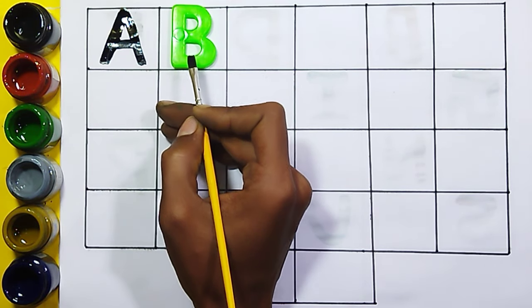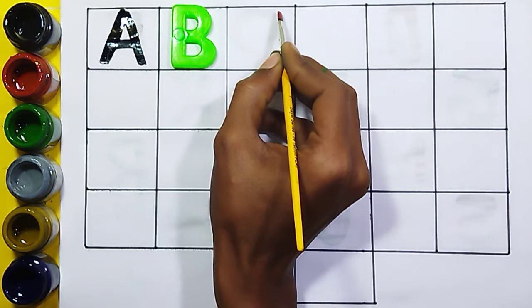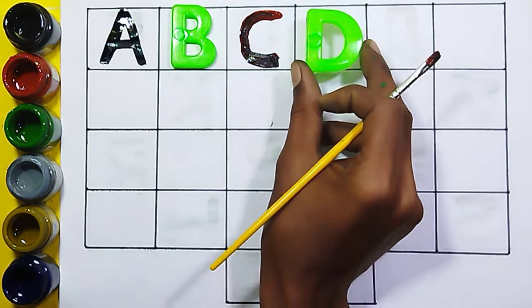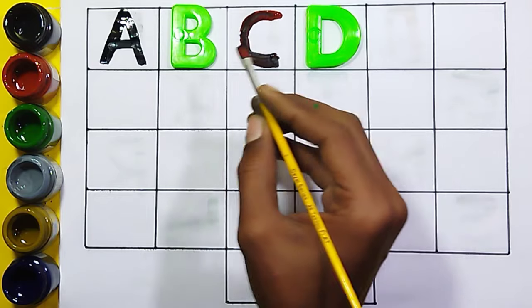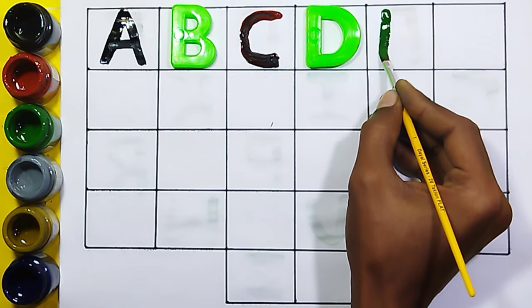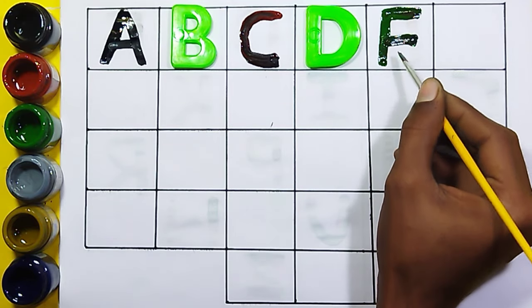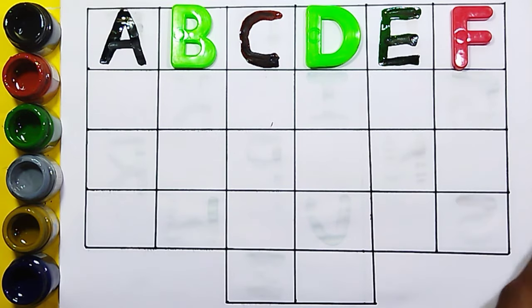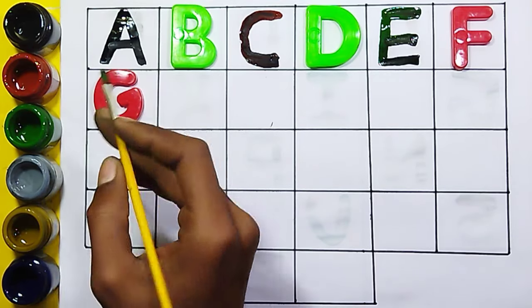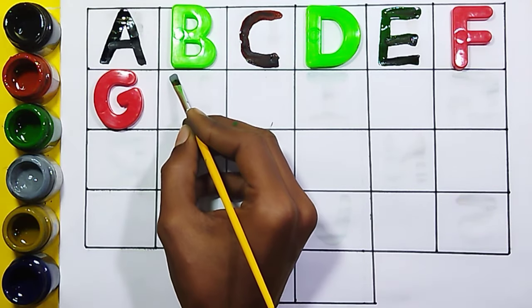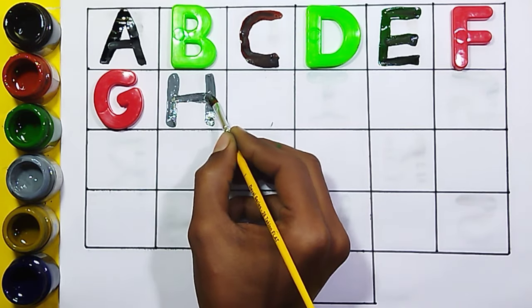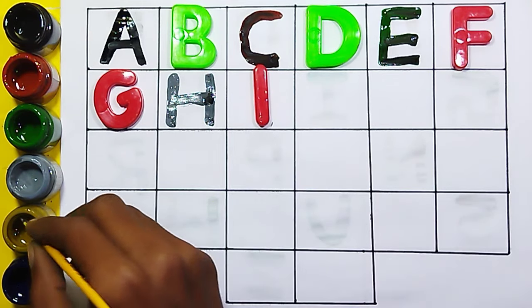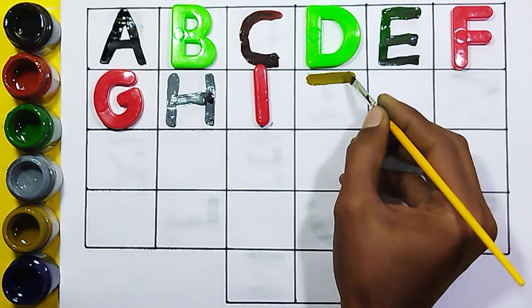B for ball, red color. C, C for cat, green color. D, D for dog, green color. E, E for elephant, red color. F, F for face. G for crabs, gray color. H, H for hen, red color. I, I for ice cream, yellow color.